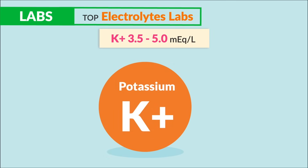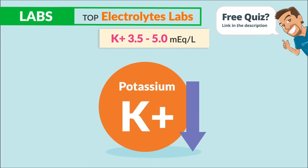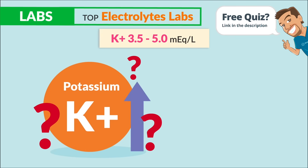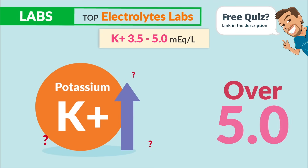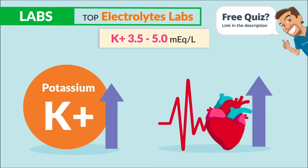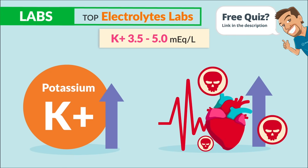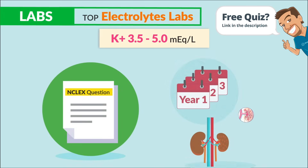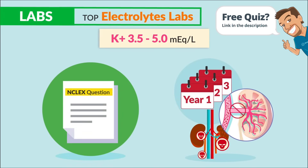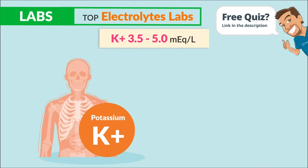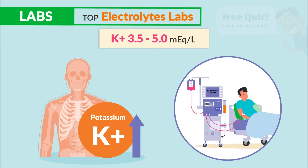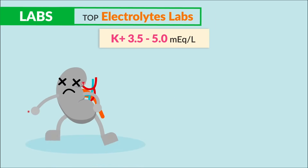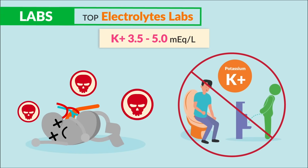To treat high potassium over 5.0, with high pumps in the heart leading to deadly cardiac dysrhythmias: the NCLEX loves to ask about clients with renal failure or chronic kidney failure who have built up potassium while waiting for dialysis, since their broken kidneys can't excrete that potassium.